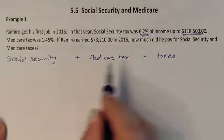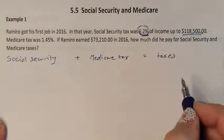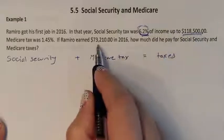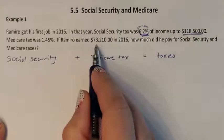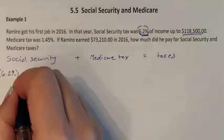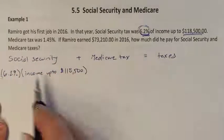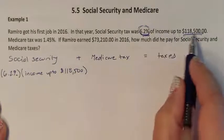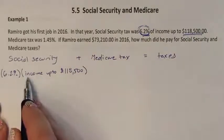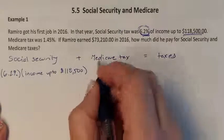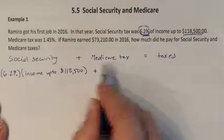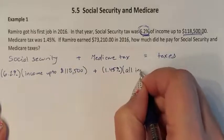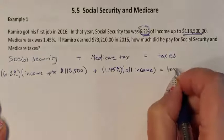Social Security only charges 6.2% up to the maximum limit. Since Ramiro has not reached that limit, he pays 6.2% of his earnings. Medicare, on the other hand, you always pay 1.45% of your entire income, and these two together will be your total taxes.